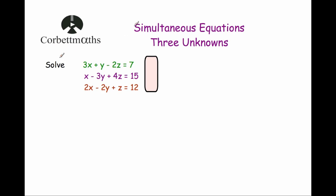Welcome to this CorbMath's video on simultaneous equations with three unknowns. Here we've got a typical question to solve: 3x plus y minus 2z equals 7, x minus 3y plus 4z equals 15, and 2x minus 2y plus z equals 12. We're going to solve these simultaneous equations to find the value for x, y, and z.